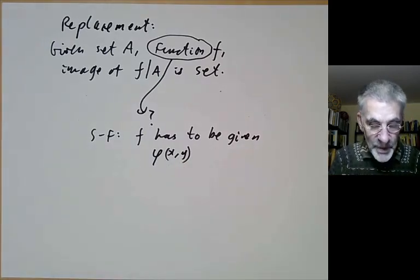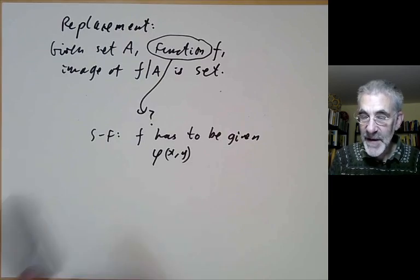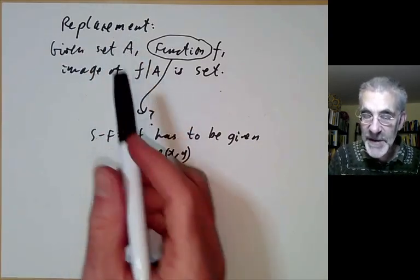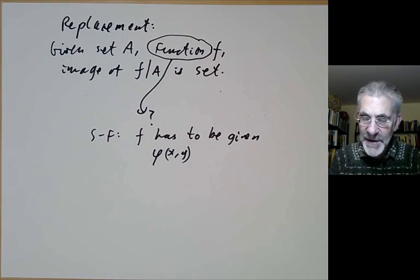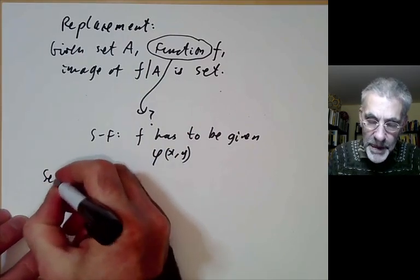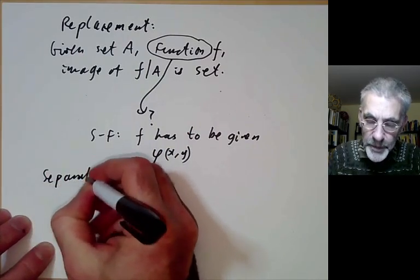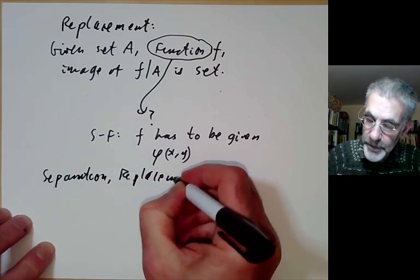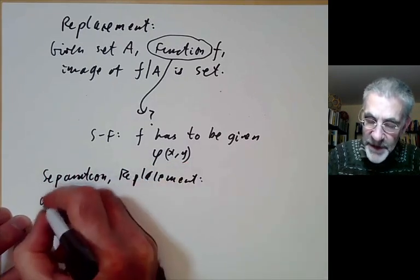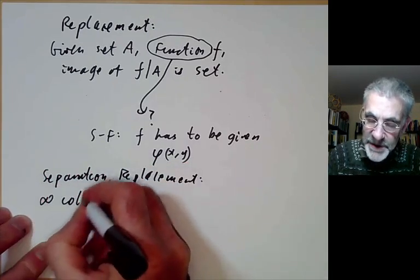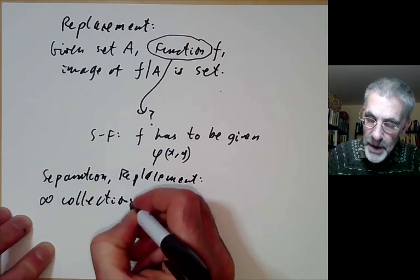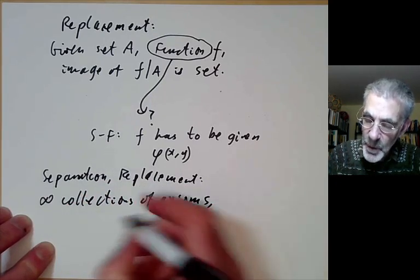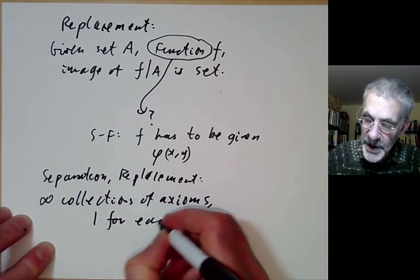Once you've done this, this becomes a well-defined axiom. Actually, it's not really a single axiom — separation and replacement are both infinite collections of axioms, one for each formula phi.